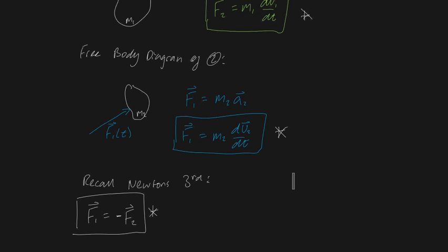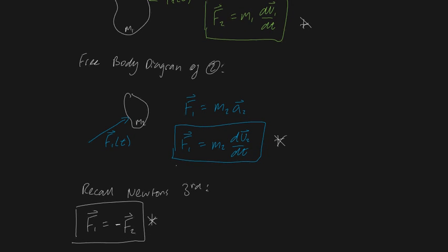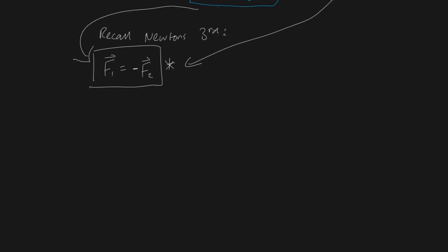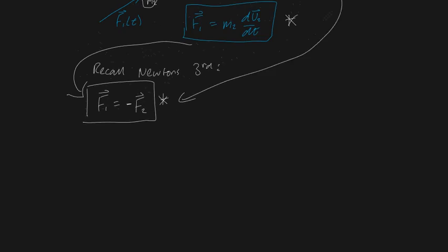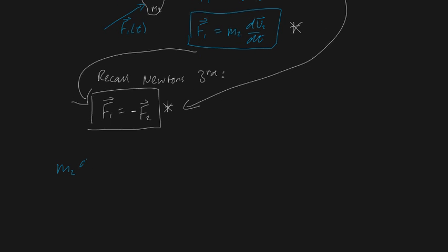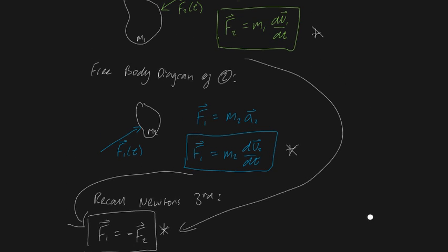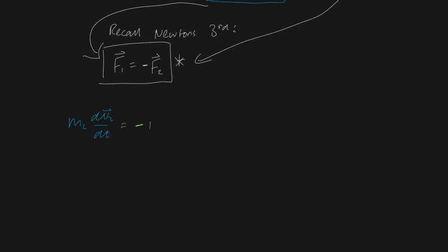I'm going to substitute F1 and F2 into the equations. We're left with F1, which was m2 dv2/dt, must be equal to minus F2, which was m1 dv1/dt. So we have: m2 dv2/dt equals minus m1 dv1/dt.